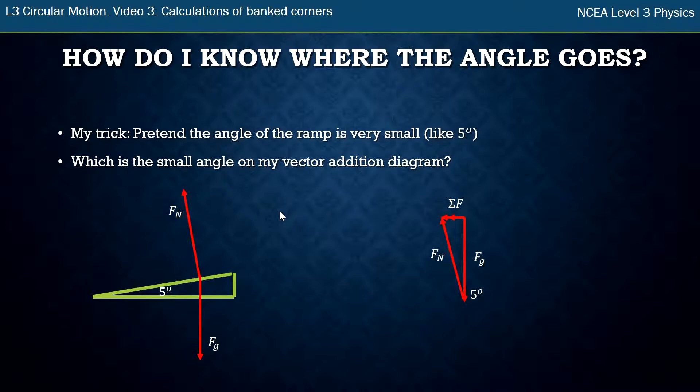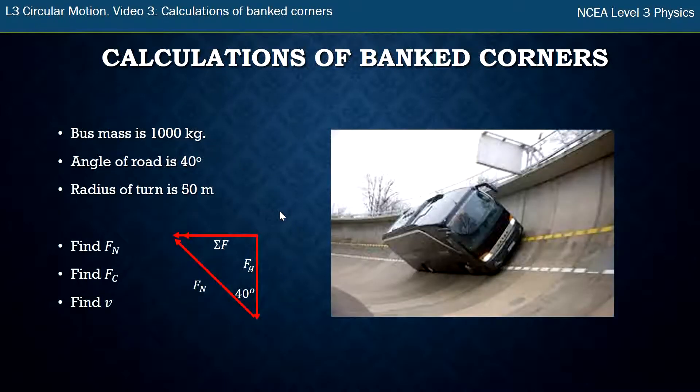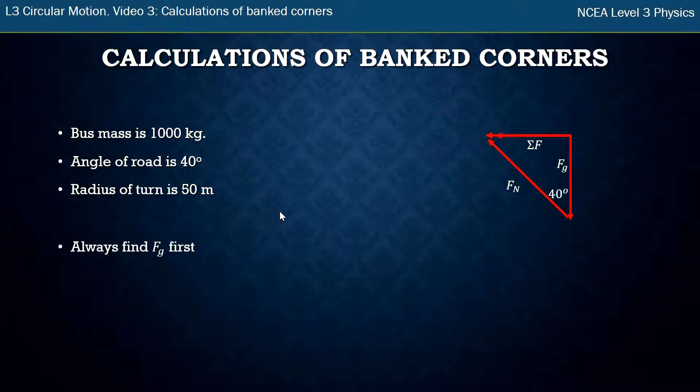So then I just go to my actual vector addition diagram with the 40 degrees on, and I know it's in the same place. So that's my little hint here, my little trick that I'd use. Okay, we've got the angle, so let's find some things. Normal force first. Always in these situations, the information you've got to start with is to find gravity first. Gravity is just force equals mass times gravity. Find the force of gravity. So this was 1000 times 9.8 newtons per kg gives you 9,800 newtons.